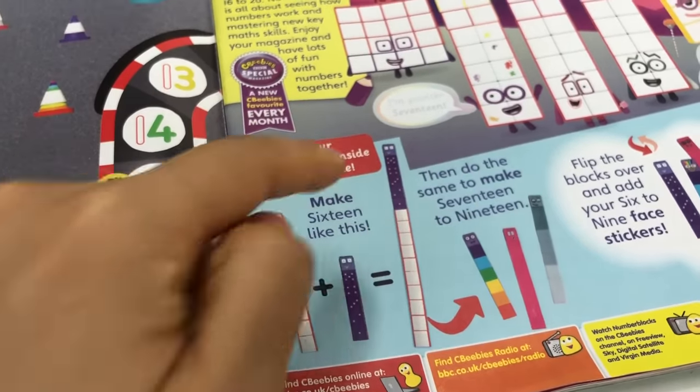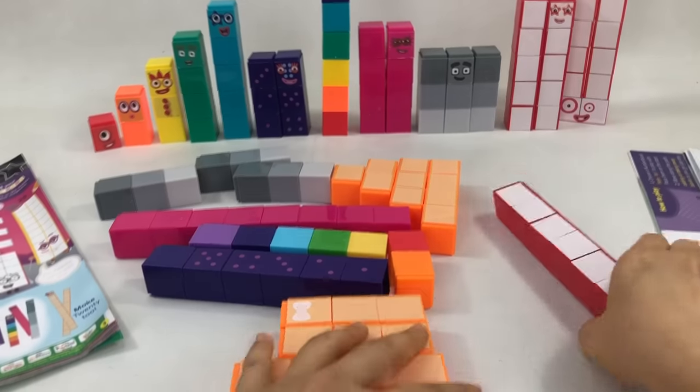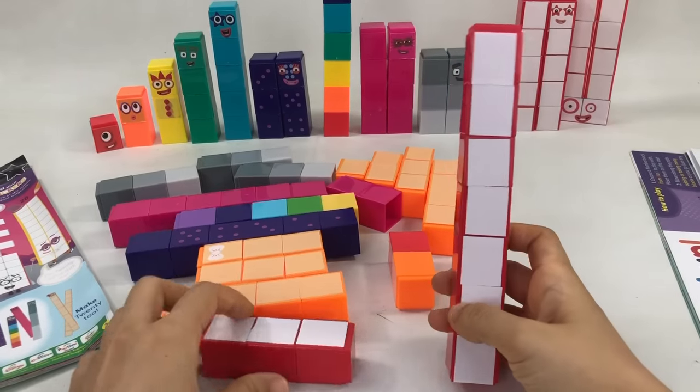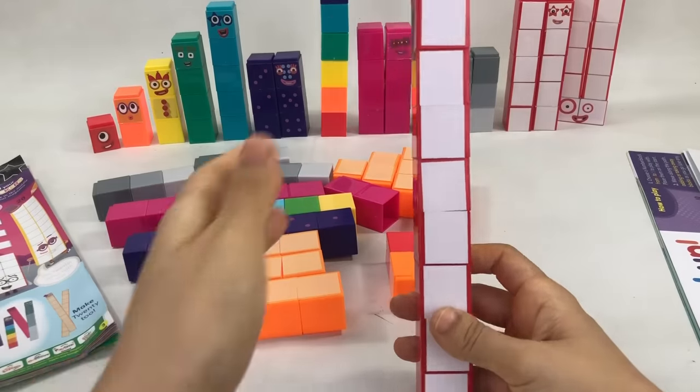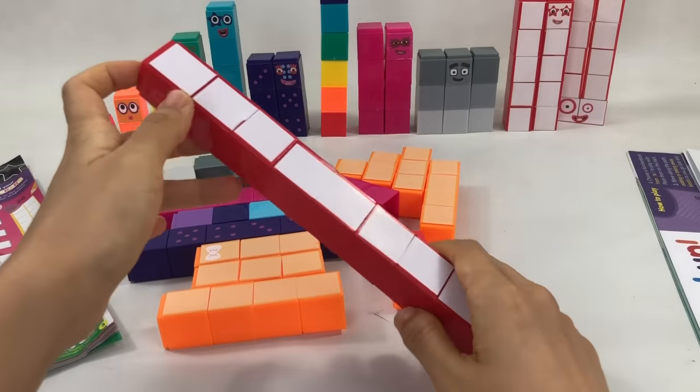Let's start with number block 16. And just as it says in the magazine, first we'll build number block 16 as a tower. First, we'll start with 10 red blocks.